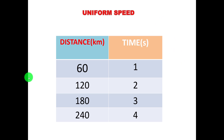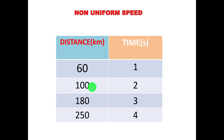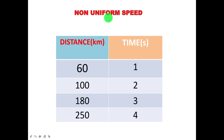Look at this table of distance and time. For uniform speed: hour 1 = 60 km, hour 2 = 120 km, hour 3 = 180 km. Subtracting each interval gives 60 km — equal each time. For non-uniform speed: hour 1 = 60, hour 2 = 100, hour 3 = 180, hour 4 = 150. Subtracting gives 40, then 80 — not the same. So the car does not cover equal distance in equal intervals of time, meaning it is in non-uniform speed.